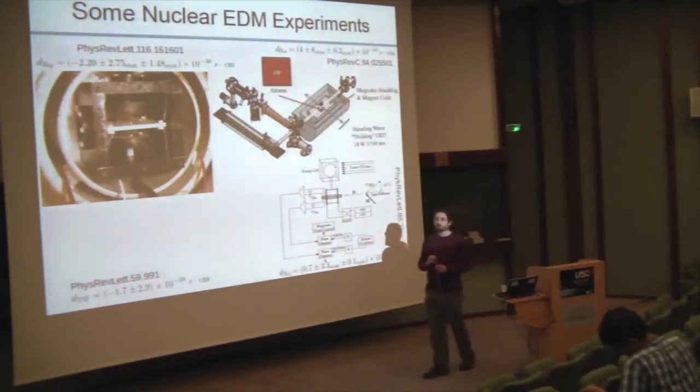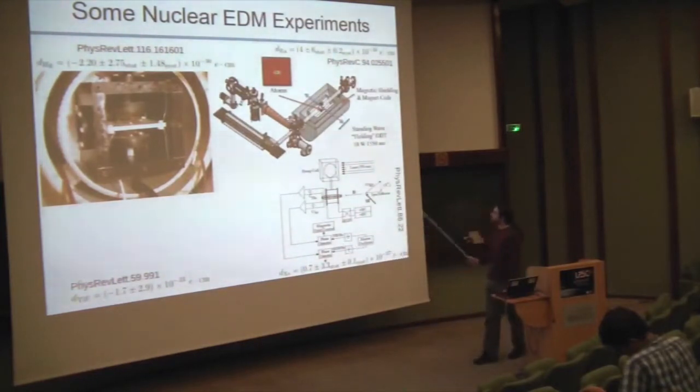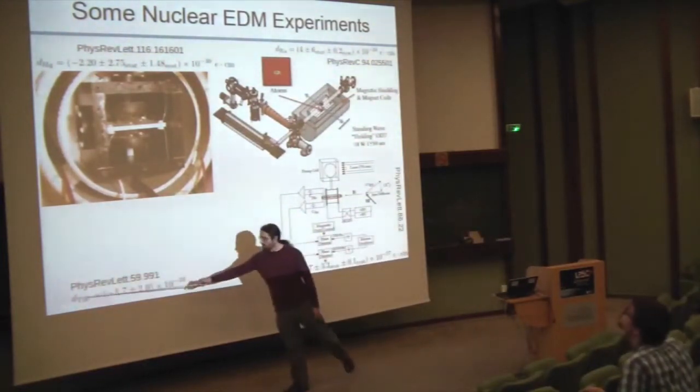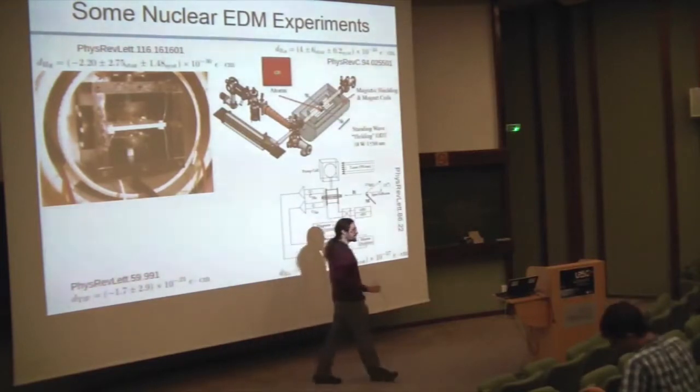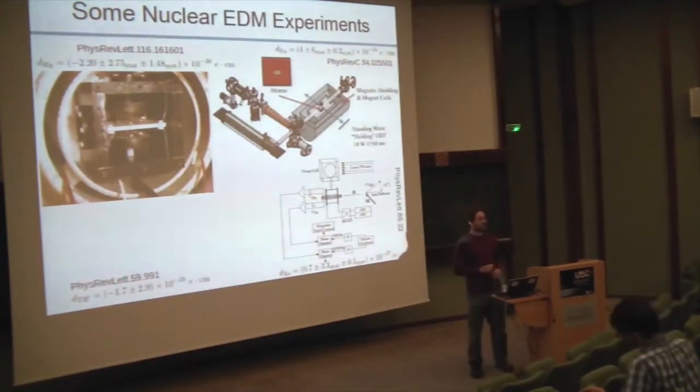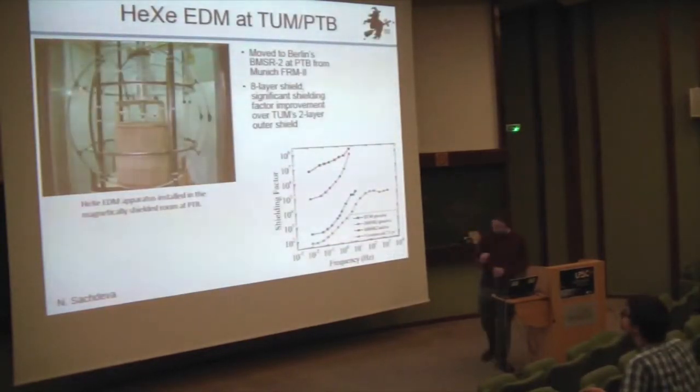It's actually not obvious when you look at these two numbers, but you probably gain more in terms of joint constraints on CP violation parameters from increasing an order of magnitude in sensitivity of the radium experiment than from doing the same in mercury. Xenon-129 is another system—this bound dates from 2001 so it's been a while since it was updated. There is also a diamagnetic molecule, thallium fluoride, which is particularly interesting for the same reason that radium and radon would be because of a Schiff moment enhancement.